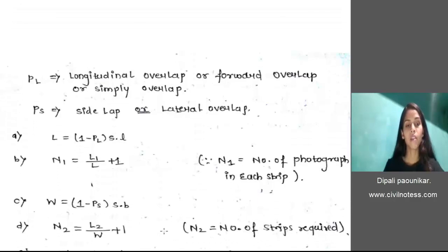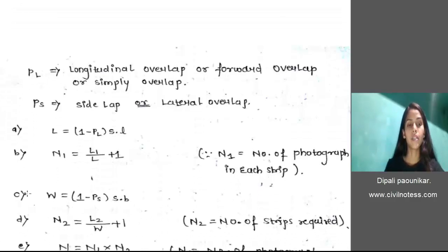After that, W, where W is the actual ground width covered by each photograph: W equals 1 minus PS into S into B. PS is denoted by side overlap, that is the lateral overlap. S is the scale of photograph and B is the width of photograph.